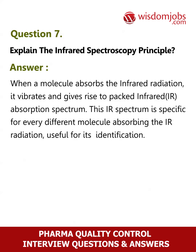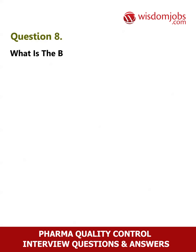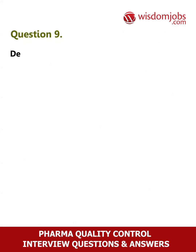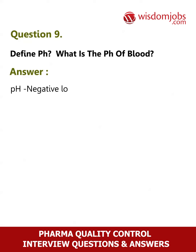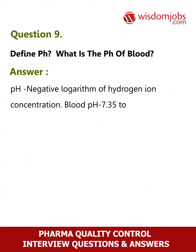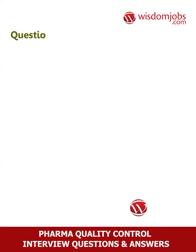Question 8: What is the body temperature? Answer: 37 degrees Celsius or 98.6 degrees Fahrenheit. Question 9: Define pH. What is the pH of blood? Answer: pH is the negative logarithm of hydrogen ion concentration. Blood pH is 7.35 to 7.45.